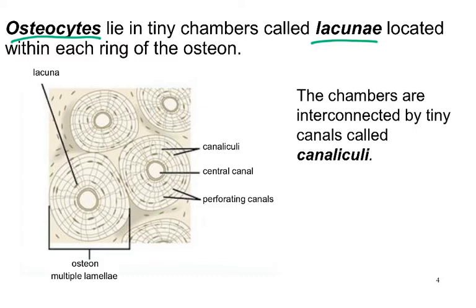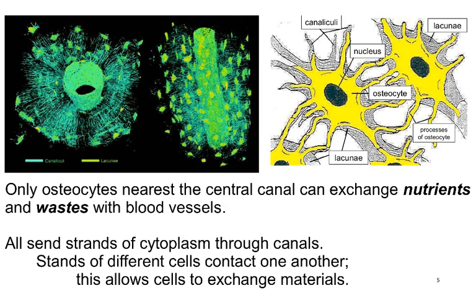We have perforating canals and the central canal, but we still need another plane of access in order to have three-dimensional access to nutrients and waste disposal. That's performed by very tiny canals referred to as canaliculi — which means 'teeny tiny canals' in Latin. These canals are really important because only the osteocytes directly near the central canal have access to the blood supply.